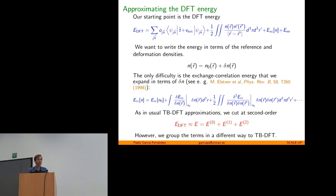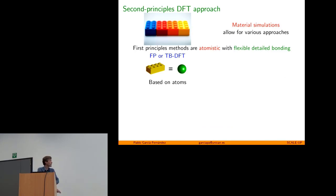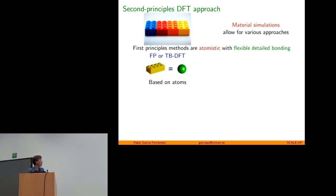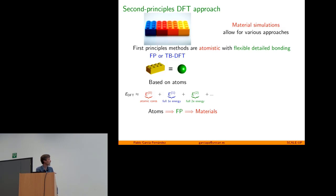We group terms differently from tight-binding DFT in order to get more accuracy. For first principles or tight-binding DFT, the core element used in simulation requires pseudo-potentials or an atomic basis - the construction piece is an atom. First principles give you bonding, and when you make the expansion, the reference system gives what is going on with atomic cores, while the correction involves bonding where most of the electrons are involved. That is not what we want to do.